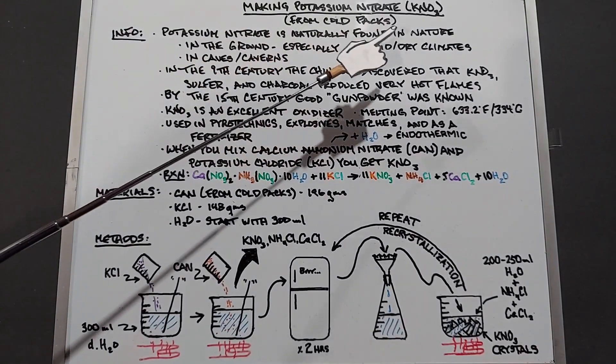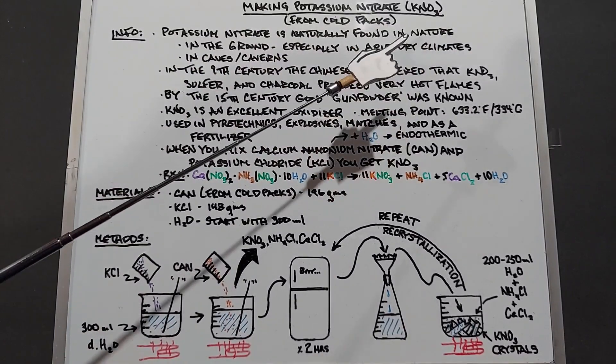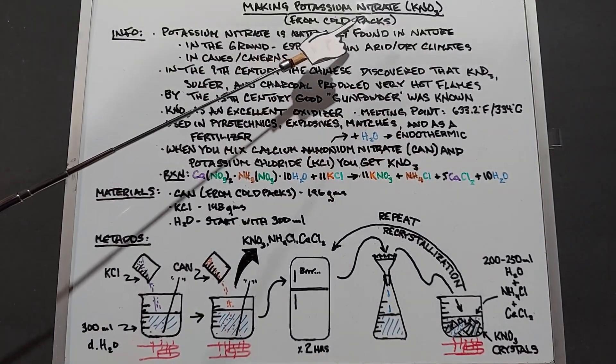We're going to be making potassium nitrate, KNO3, in this video and we're going to use over-the-counter cold packs to do it.